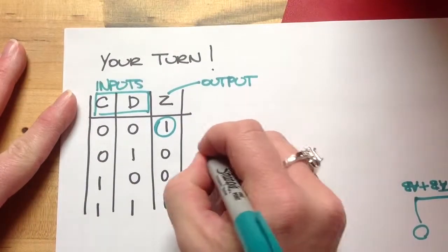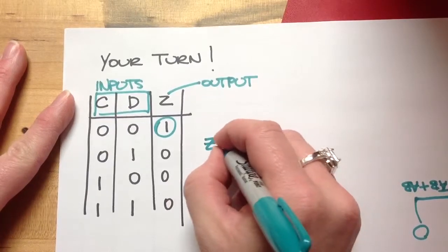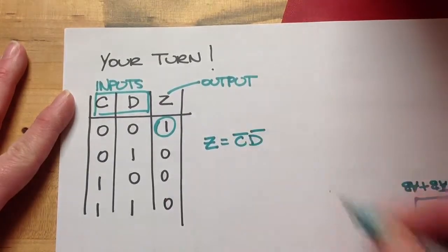So this one would be Z is equal to not C, not D.